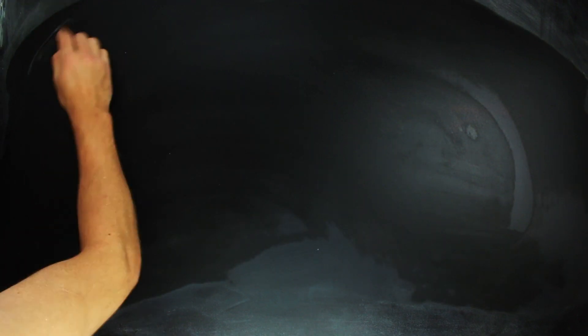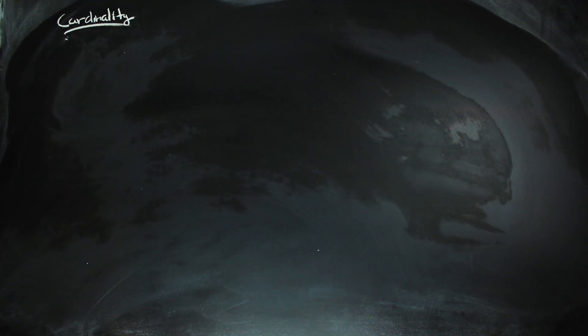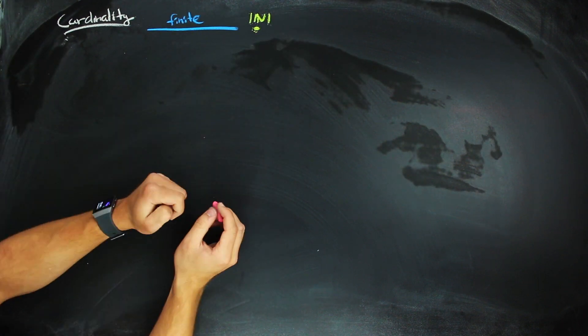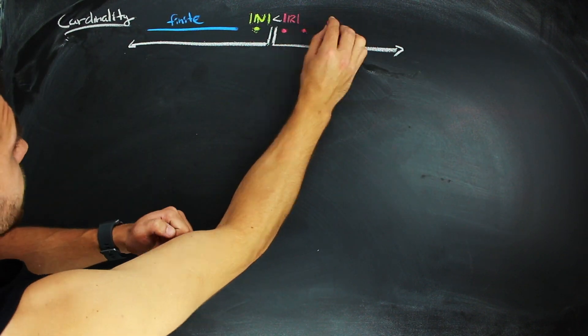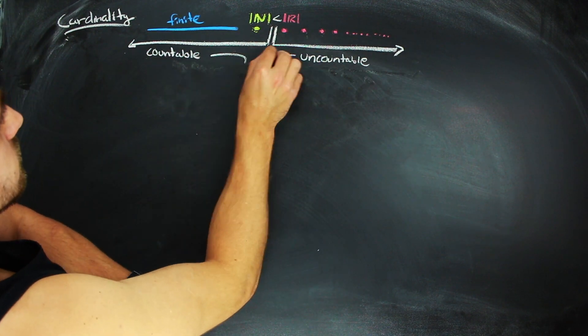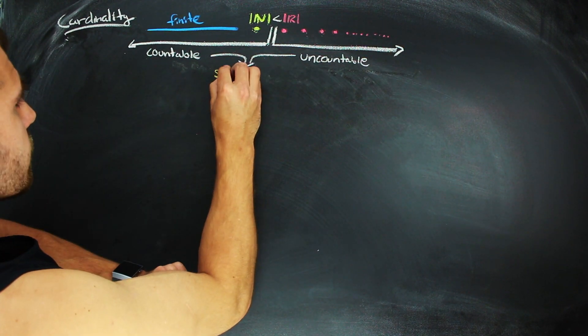The existence of another cardinality of infinity is what defines countability and uncountability. That is, a set is countably infinite if its cardinality is equal to that of the natural numbers. And it's uncountably infinite if its cardinality is strictly larger than the cardinality of the natural numbers.